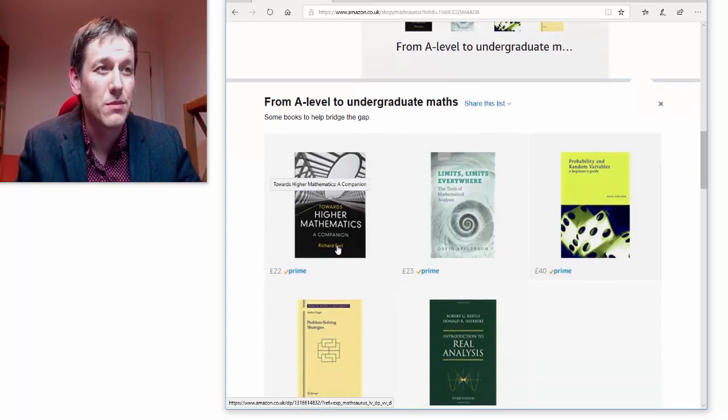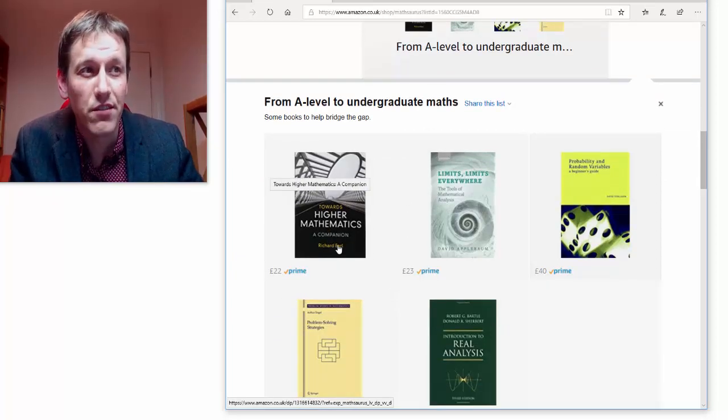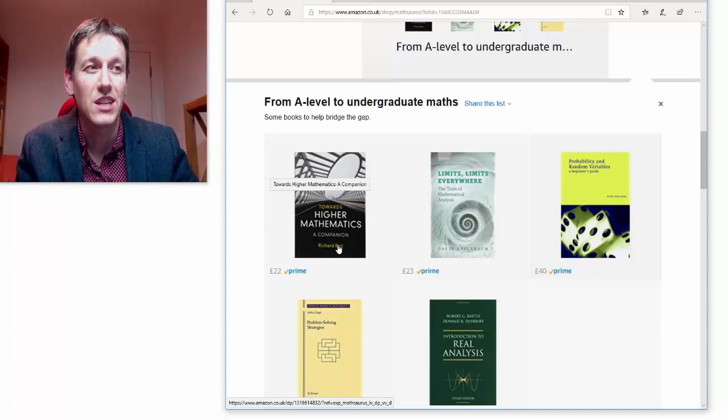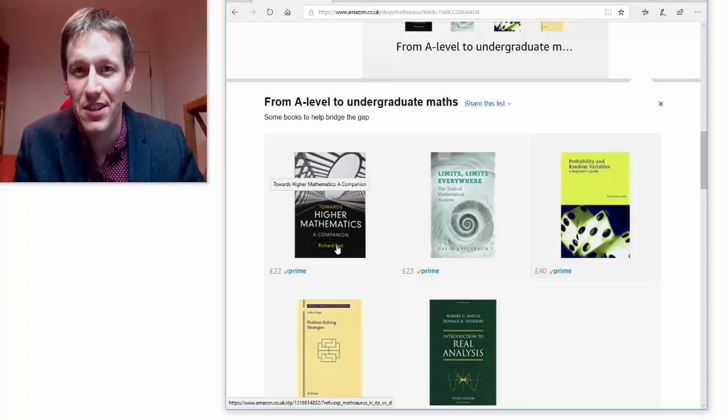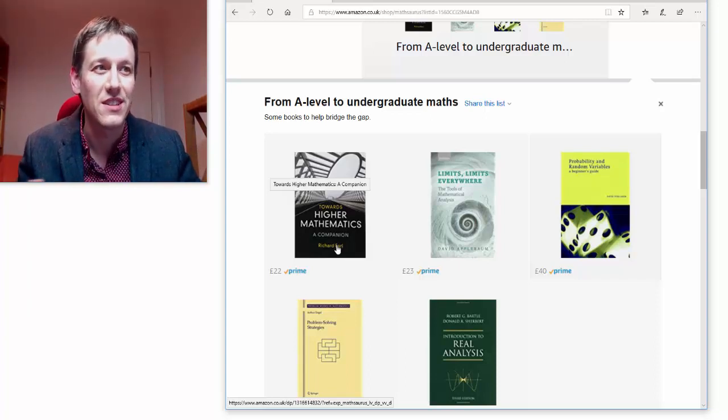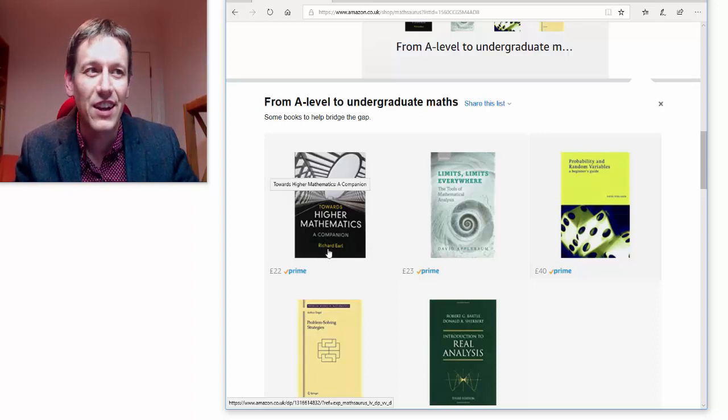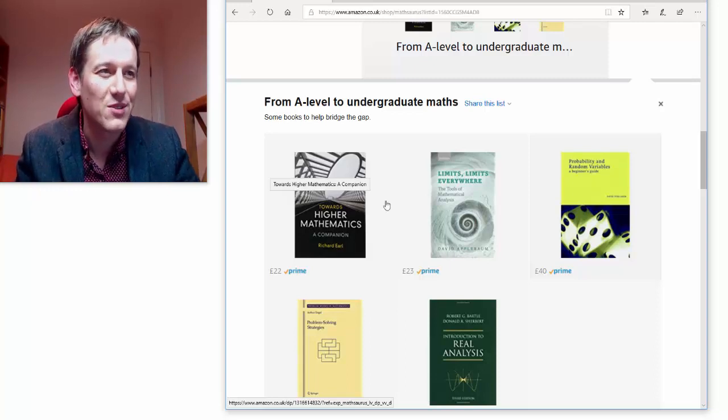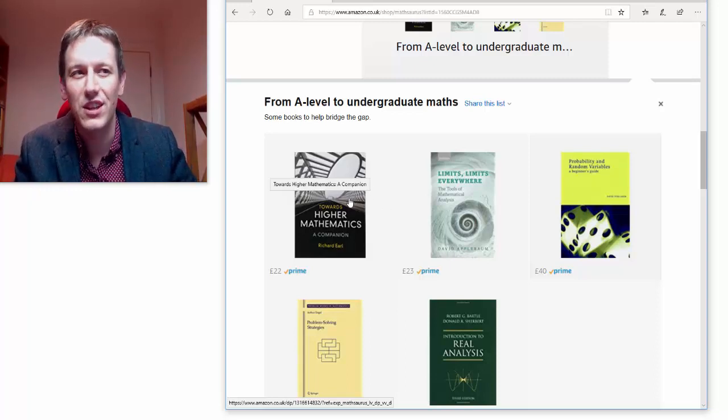In particular this one here, Towards Higher Mathematics, written by Richard Earle, who is a professor at Oxford University who's been in charge of undergraduate admissions there for many years. I was an undergraduate in Oxford and I worked with him on a teaching course and on summer schools. He's a really great guy and a brilliant mathematician and has been working on this book for a long time. If you've worked through this you're at a huge advantage.